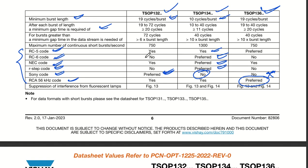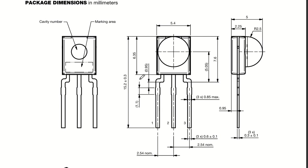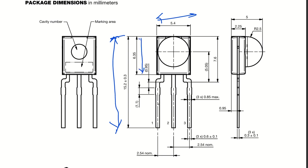Looking at the package dimensions: the total length is around 15 mm, but the functional body length is around 6 mm, and the thickness is 5 mm. Total dimensions are approximately 5.4 × 6.35 × 5 mm.